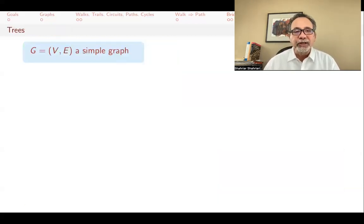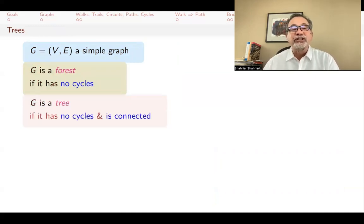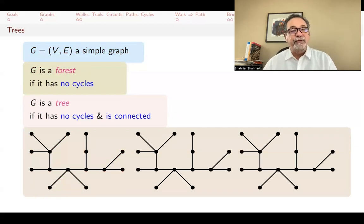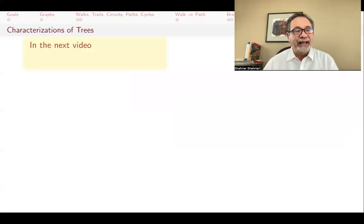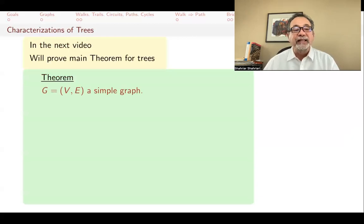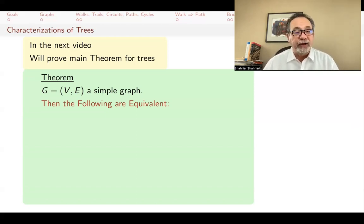What are trees? For simple graphs: a graph is called a forest if it has no cycles. A tree is a forest that is also connected — no cycles and connected. A forest can have multiple connected components, but a tree has exactly one. For example, a single connected acyclic graph is a tree; if you have several such trees together, you get a forest. In the next video we will prove an important theorem giving a full characterization of trees.